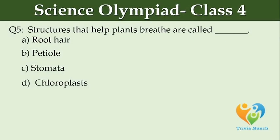Structures that help plants breathe are called dash. A: Root hair, B: Petal, C: Stomata, D: Chloroplast.